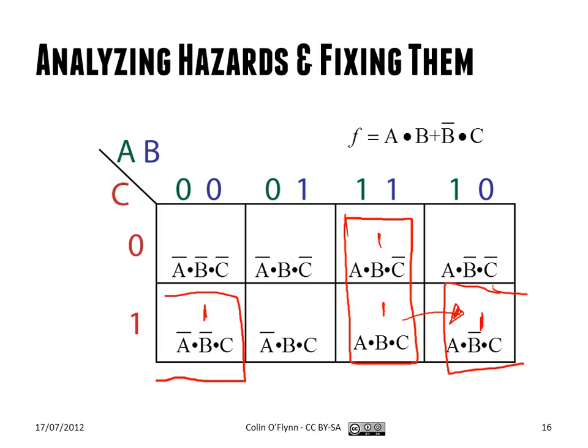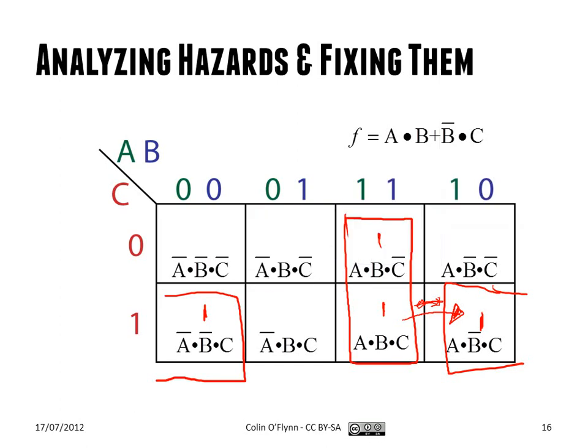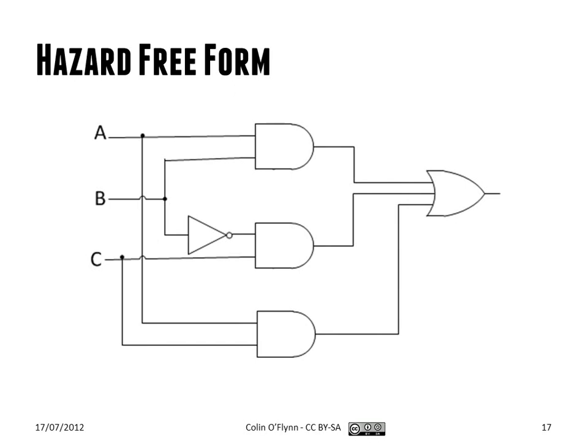And what happens is that in the intermediate time here, you can sort of think about it this way, that it's not covered by either product term. And that's bad because that means it may go to an unintended value. It's not forced to something specific. So to fix that, we just have to create a hazard form that always encompasses all transitions. So we draw another product term around those two. This we could call the hazard-free form now. This additional product term does add extra logic. So we could say it's A and C. So the hazard-free form becomes A and C.